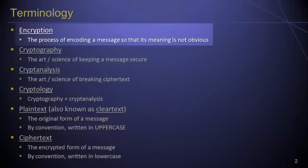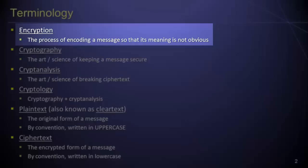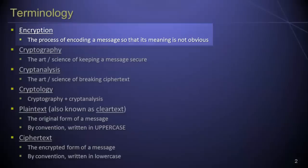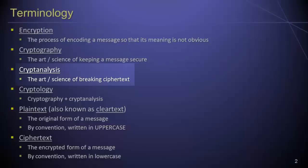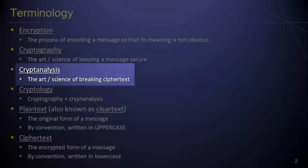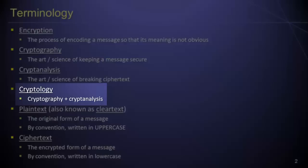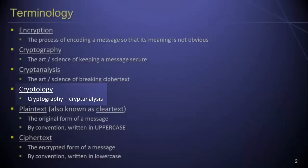First among these is the term encryption itself. Encryption simply refers to the process of encoding a message or data so that its meaning is not obvious. Encryption is a part of cryptography, which refers to the art and science of keeping a message secure. Cryptanalysis, by contrast, refers to the art and science of breaking an encoded message. Cryptology, then, is a high-level umbrella term used to describe the field which includes both cryptography and cryptanalysis.